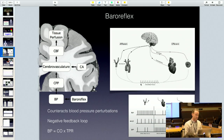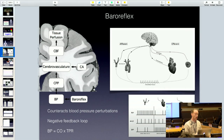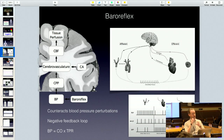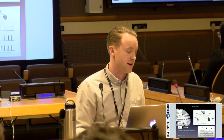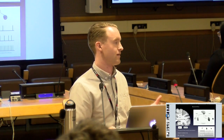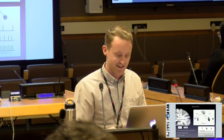Blood pressure is a product of cardiac output and total peripheral resistance. Cardiac output is related to heart rate and the amount of blood pumped out for each heartbeat, and total peripheral resistance has to do with the change in arterial diameter. If blood pressure goes up, the arteries can dilate and that helps bring pressure down. Basically, the quicker your body can do that, the more healthy you are in theory.